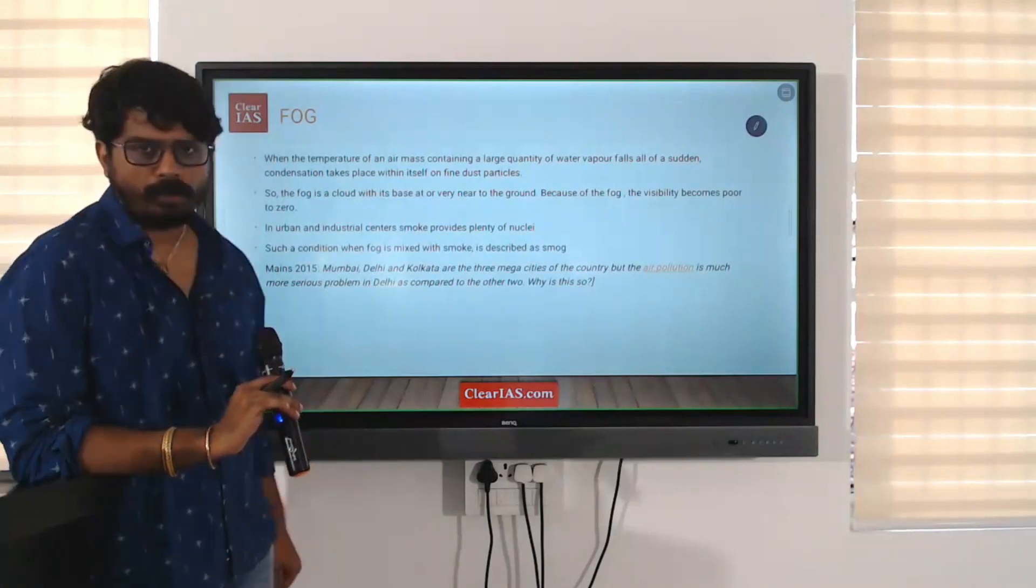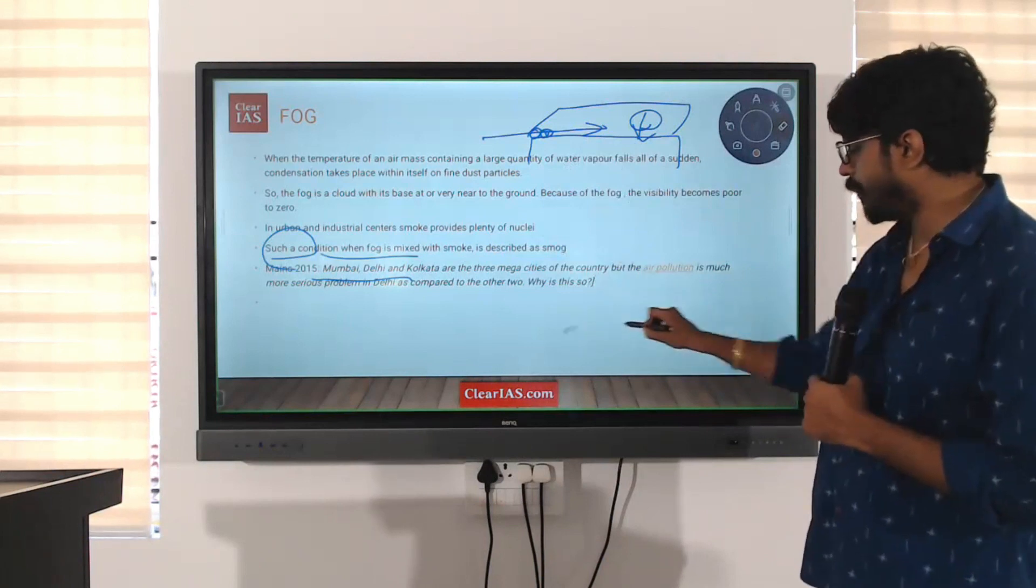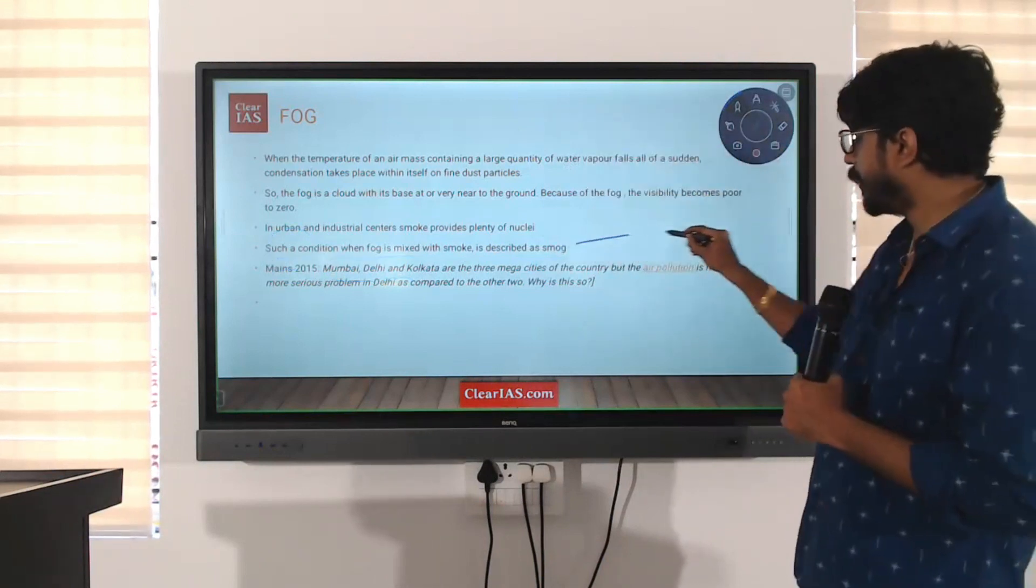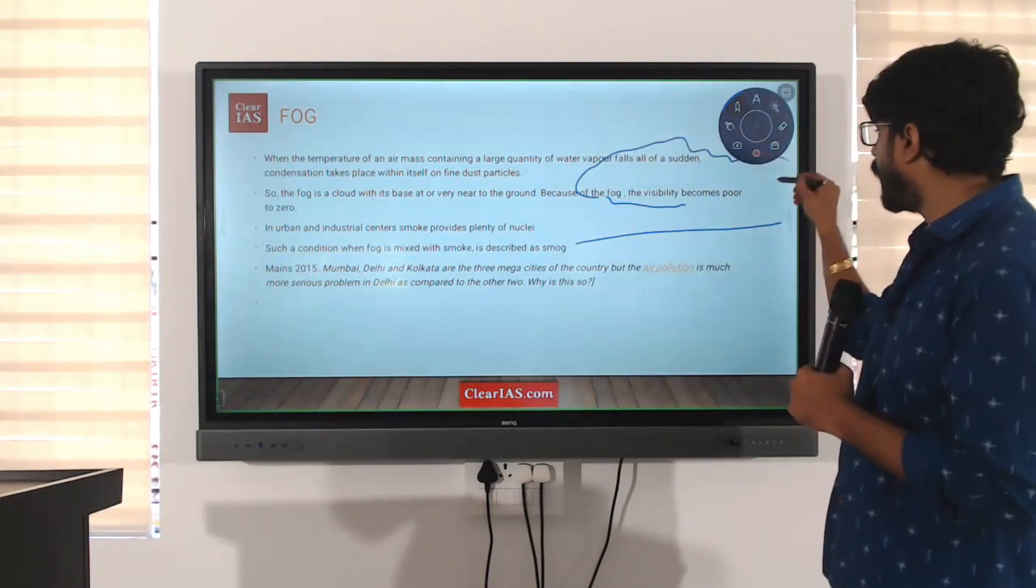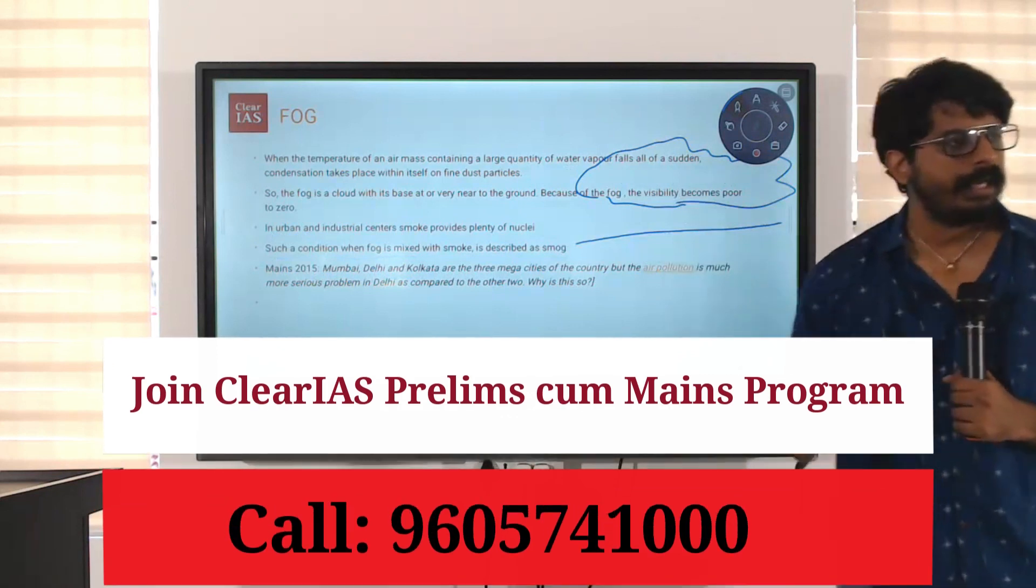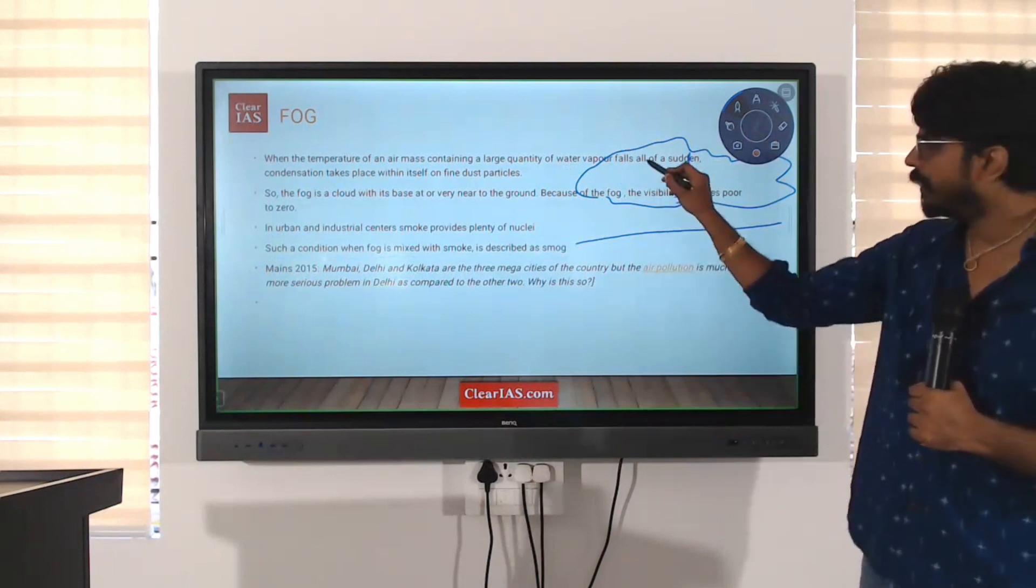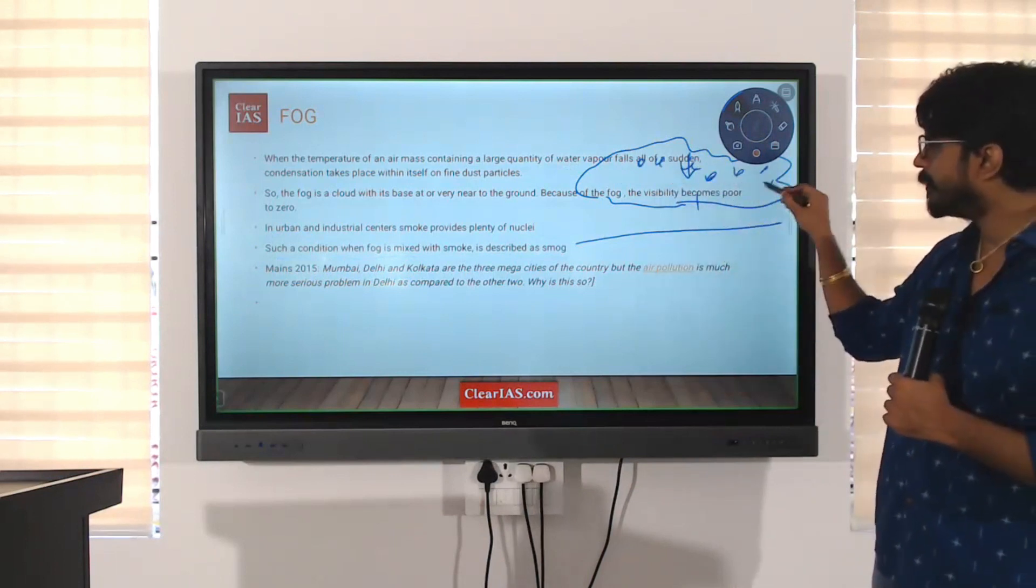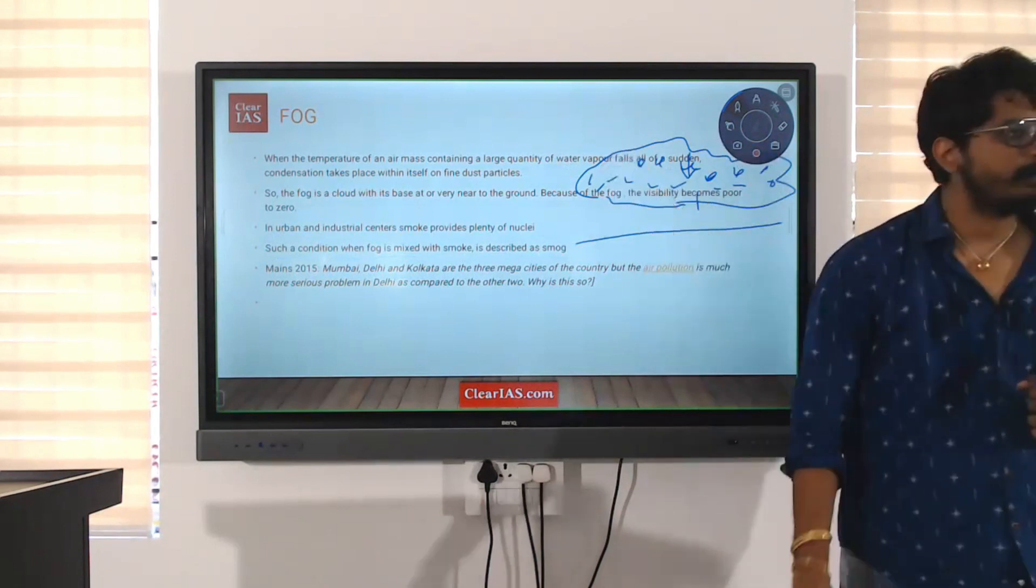Next is fog. This is the ground surface. This is the ground surface and maybe above the surface, there is a huge air mass. And due to some reason, the temperature of this air mass suddenly falls down and condensation has happened. It is not yet precipitated, but condensation has happened here. Such a parcel of air is called as fog.